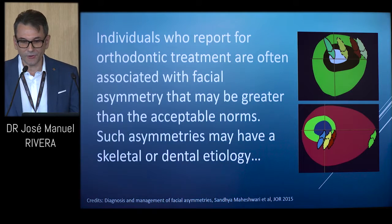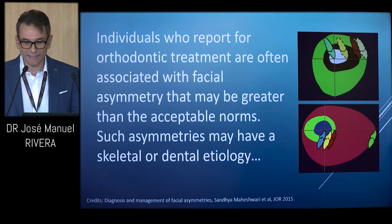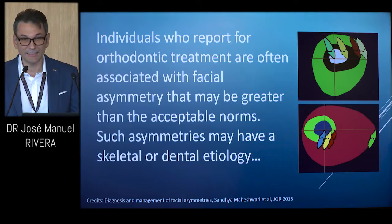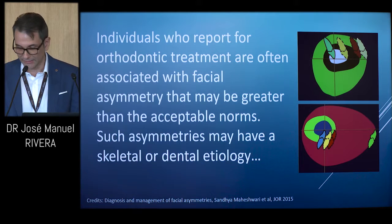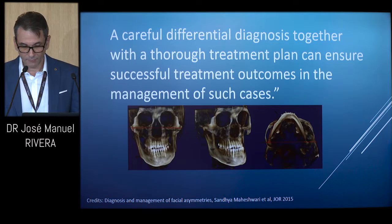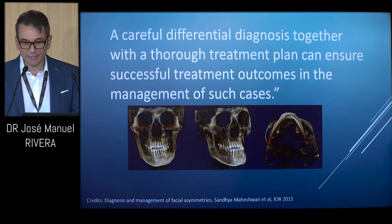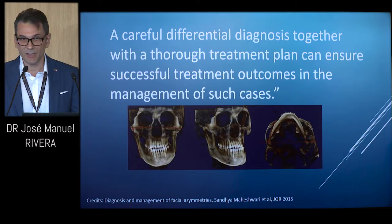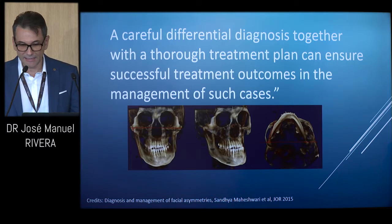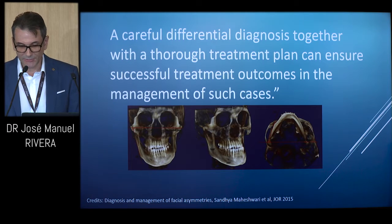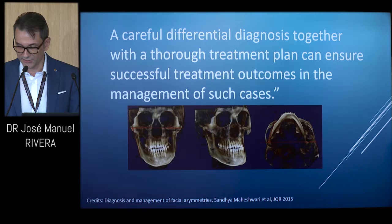Individuals who report for orthodontic treatment are often associated with facial asymmetry that may be greater than acceptable norms. Such asymmetries may have a skeletal or dental etiology. The diagnosis, treatment planning, and mechanics for the asymmetric patient require identification of the cause of the asymmetry. A careful differential diagnosis together with a thorough treatment plan can ensure successful treatment outcomes.